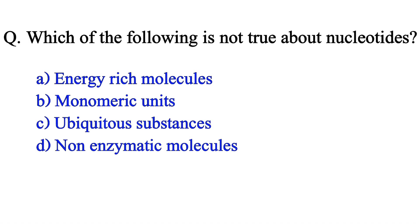Which of the following is not true about nucleotides? Option A: energy rich molecules. Option B: monomeric units. Option C: ubiquitous substances. Option D: non-enzymatic molecules. The correct answer is Option D: non-enzymatic molecules.